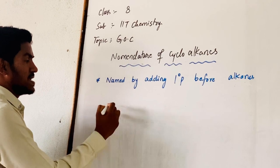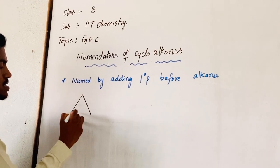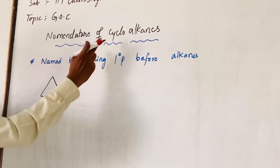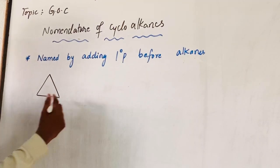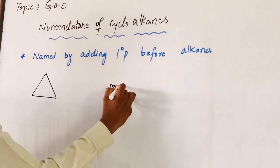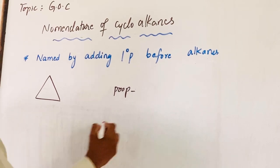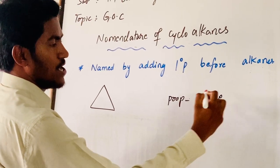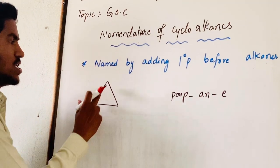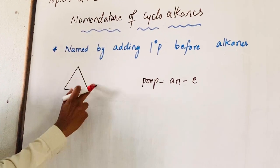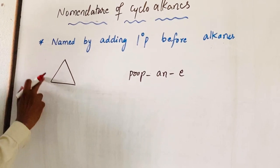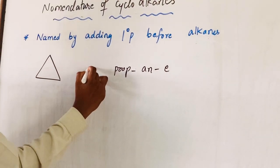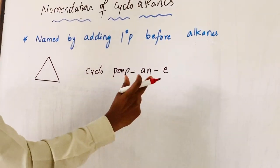Taking an example: the first cyclic compound of alkane is a 3-membered ring. The root word is 'Prop', the primary suffix is 'ane', the secondary suffix is 'e', there is no substituent so the secondary prefix is absent, and the primary prefix is 'Cyclo'. Therefore, the name is Cyclopropane.